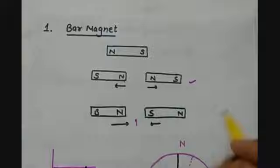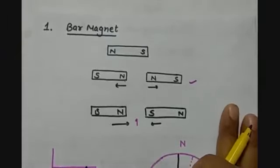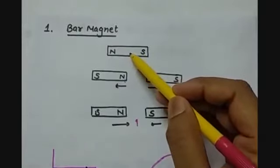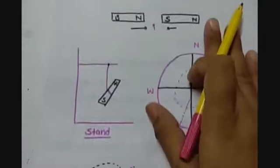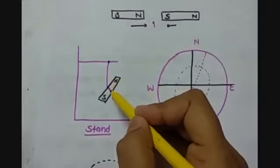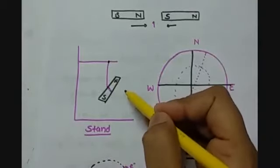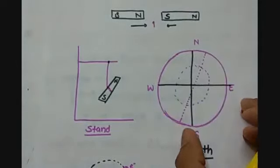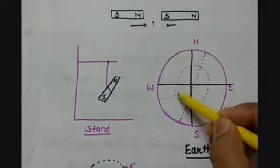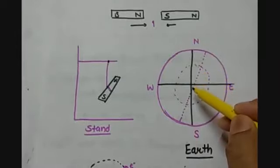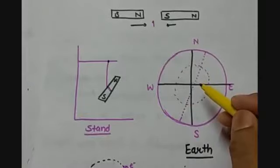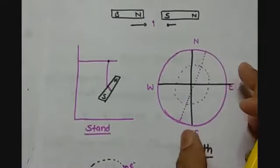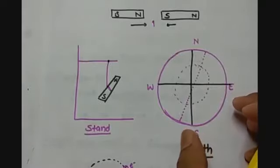One important property of a bar magnet is that when we suspend it freely by tying it in the middle on a stand, it always points in the north-south direction of the earth. Why is it so? It is because the earth is also a giant magnet. In its core there is iron, and because of the presence of that iron it behaves as a magnet, showing magnetic properties. But this effect is very weak, and that is why we do not feel the magnetic effect of the earth.